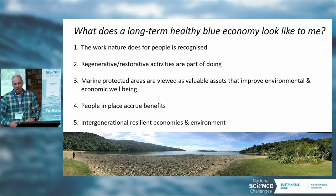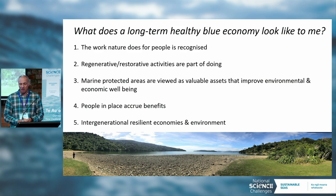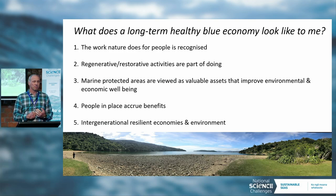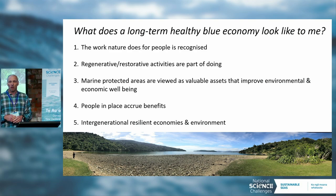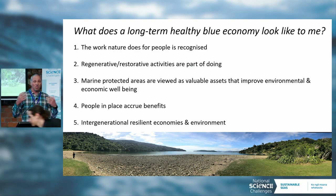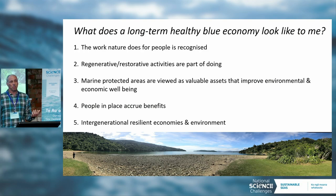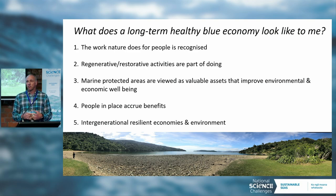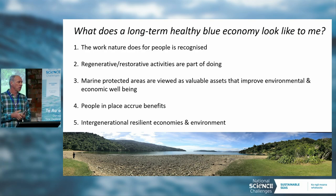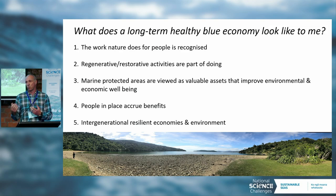In a simple series of statements, a long-term healthy blue economy comes down to five things. First, recognising the work nature does for people. Forty to eighty percent of the oxygen we breathe is generated by the oceans — where healthy, productive ocean ecosystems exist, that service is being put under threat. The ocean also sequesters vast amounts of carbon, stores it in the sediments, removes it from the atmosphere, and moderates climate change. Much of this work that nature does is underpinned by healthy ecosystems and biodiversity — and a healthy blue economy accounts for those goods and services often discounted or unrecognised in current models.